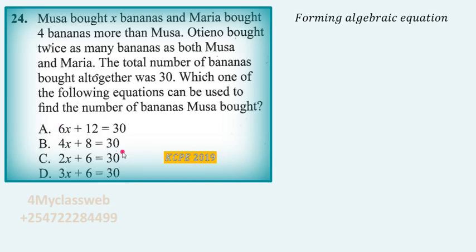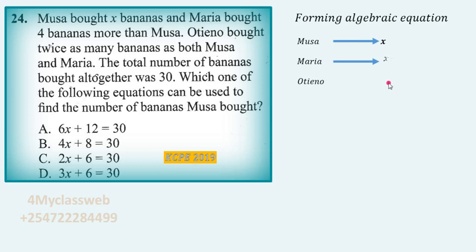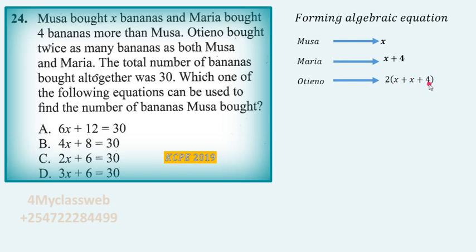Now that we have three people — Musa, Maria, and Oteno — the information given is: Musa bought x bananas; Maria bought what Musa bought plus four, that is x plus 4. When we come to Oteno, what he bought is twice what Musa and Maria bought together, that is 2 times (x plus x plus 4). Before we move further, we need to simplify this expression by removing the bracket.